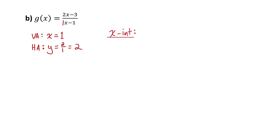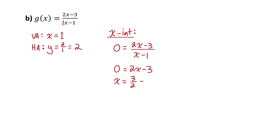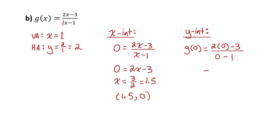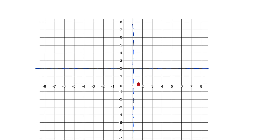Now let's get some points on the branches. For the x-intercept, I set y to zero and set the numerator equal to zero. Solving gives x equals three over two, or 1.5. So the x-intercept is at (1.5, 0). For the y-intercept, I evaluate g at zero: I get negative three over negative one, which is three. So the y-intercept is at (0, 3). Those two points are actually on separate branches of the hyperbola, so let me translate both of them to the other branch.